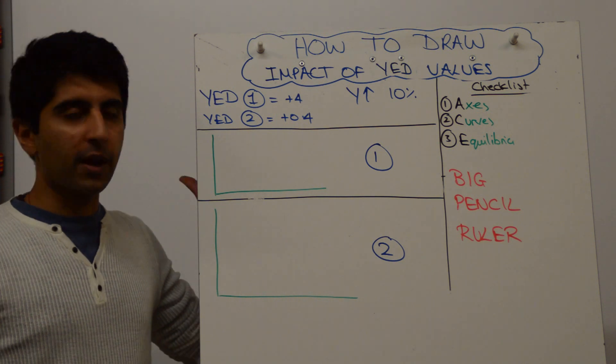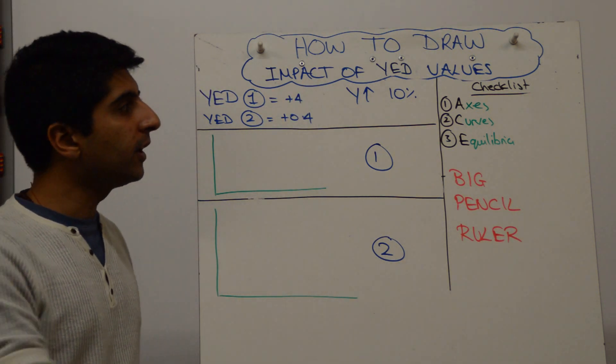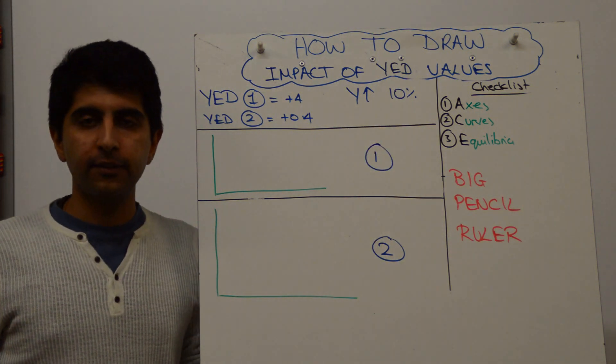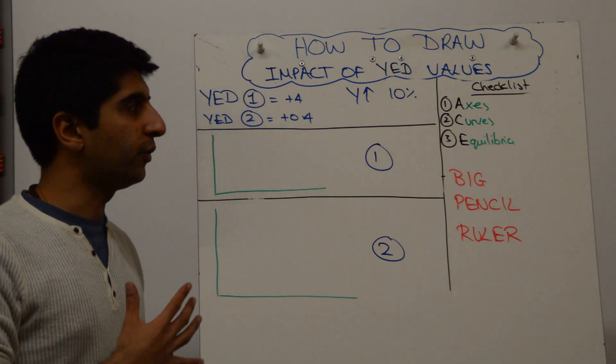A little scenario here. Let's assume we have two goods, good one, good two, with these two elasticity values. Let's assume that incomes are forecasted to rise by 10%. You need to show the impact on demand for these goods.